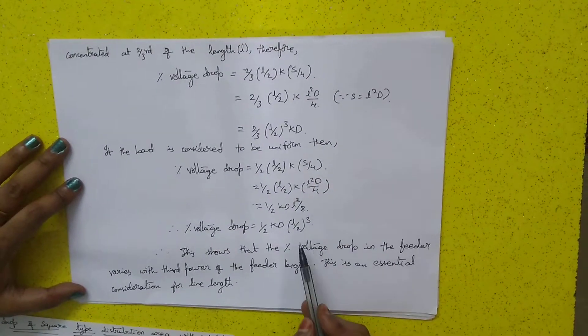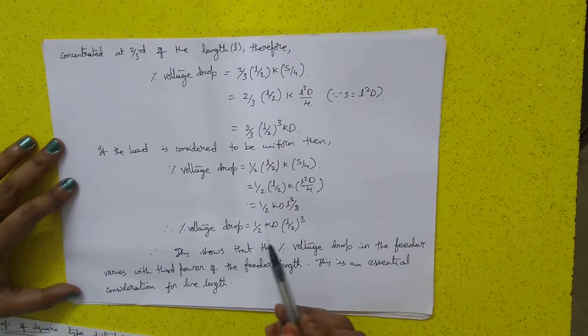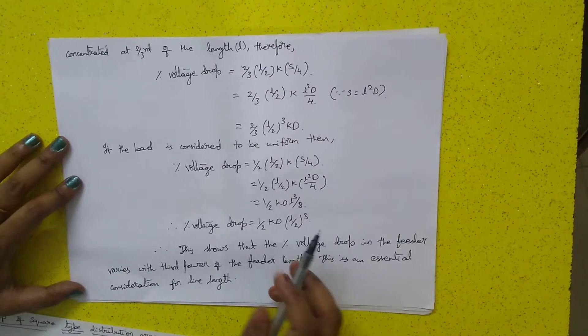This shows that the percentage voltage drop in this feeder varies with the two-thirds power of the feeder length. This is an essential consideration for the line length.